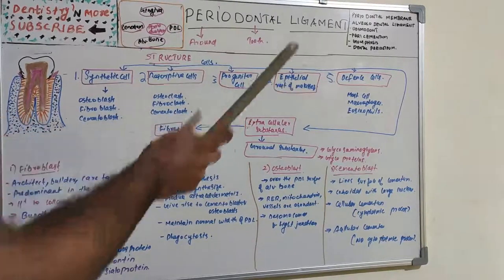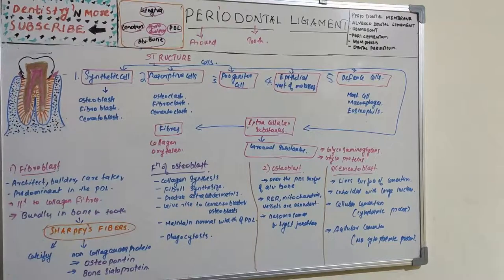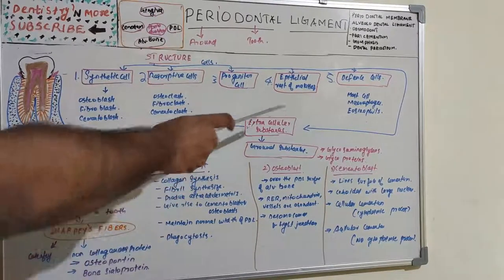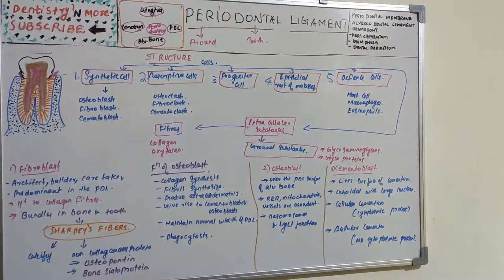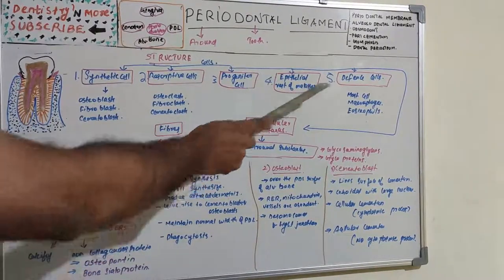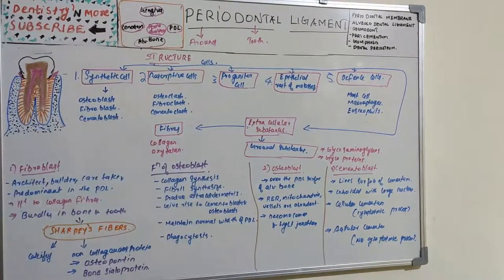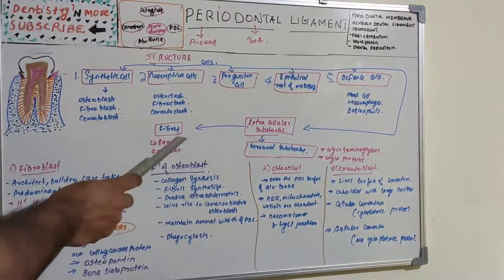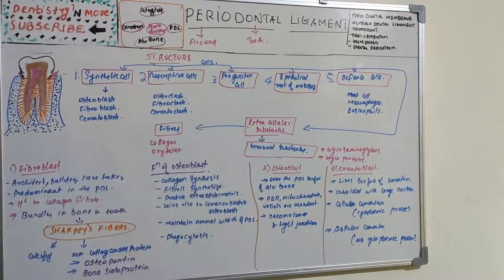Progenitor cells and epithelial rest of Malassez — we have seen when the Hertwig's epithelial root sheath was disrupted and lost its continuity, the remnants will be present in the periodontal ligament as epithelial rest of Malassez. In extracellular substances — the main bulk — we have fibers and ground substances.